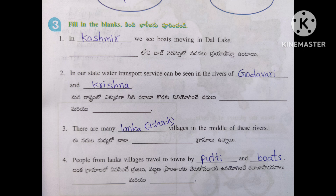Fill in the blanks. In Kashmir, we see boats moving in Dal Lake. In our state, water transport service can be seen in the rivers of Godavari and Krishna. There are many Lanka, meaning islands, villages in the middle of these rivers. People from Lanka villages travel to towns by putti and boats.